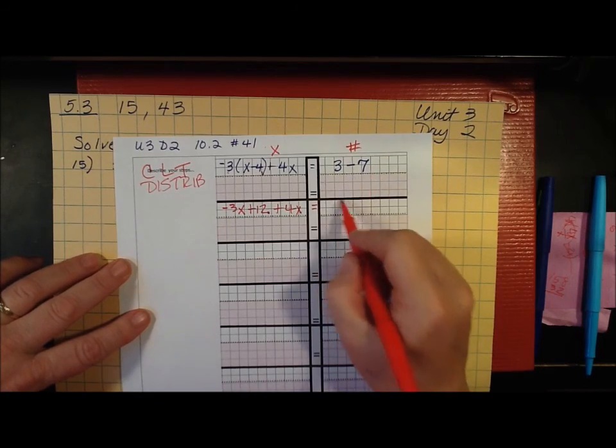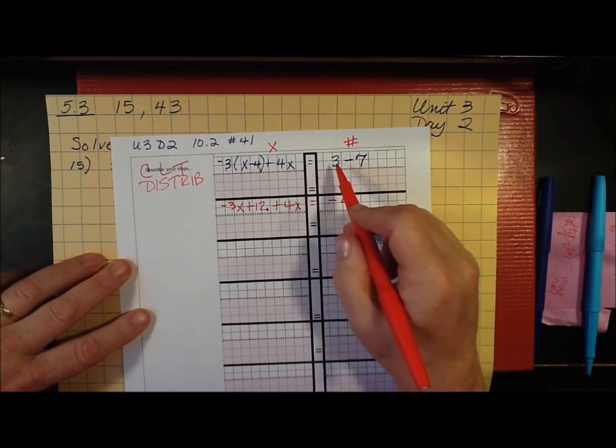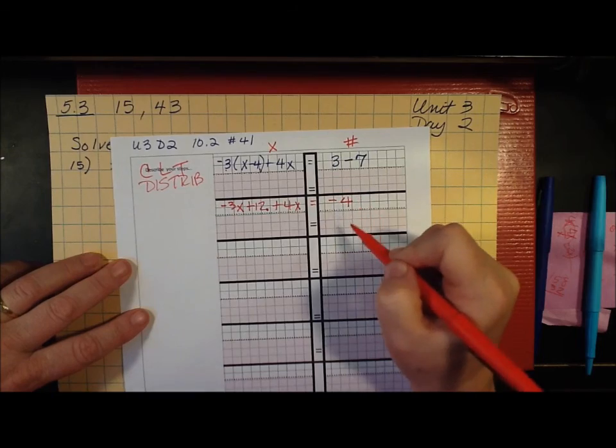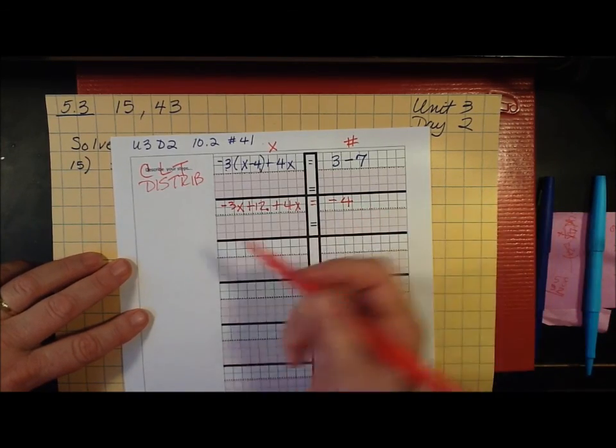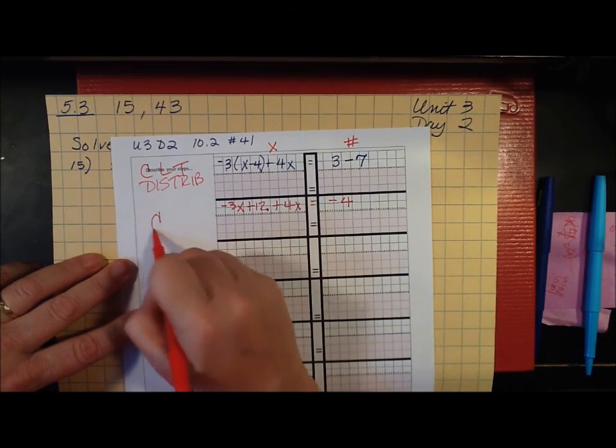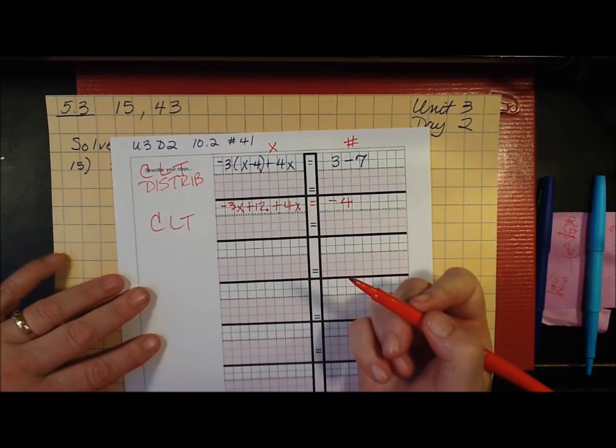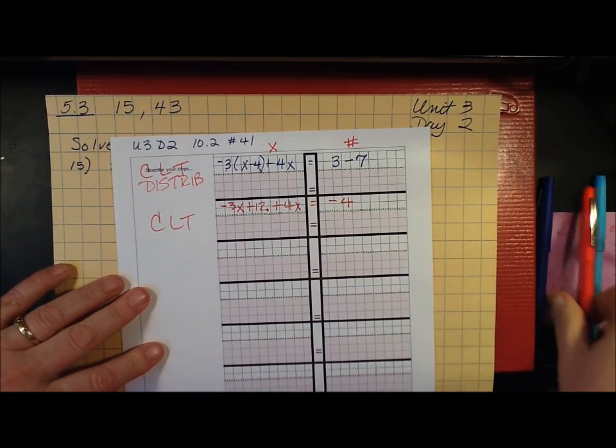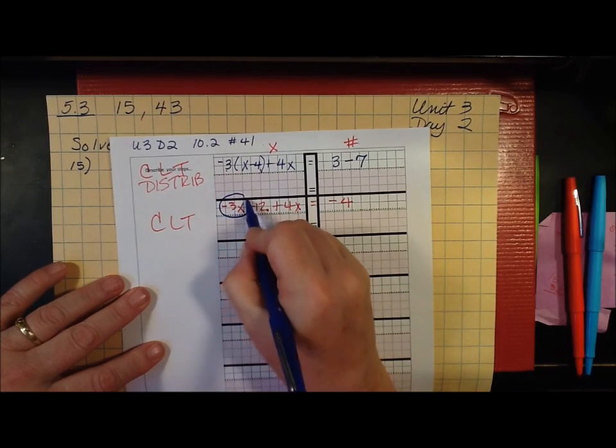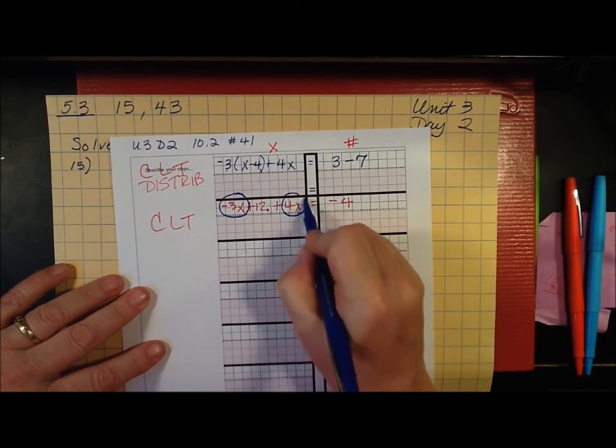3 minus 7 is negative 4 because 7 minus 3 is 4 and negative 7 is bigger. So now I took care of my distributing and now I'm going to combine like terms some more. So I have one with a variable and here's a variable.